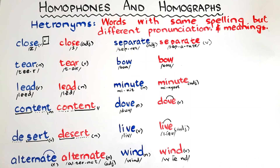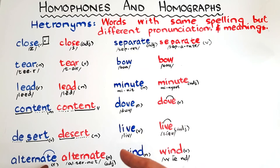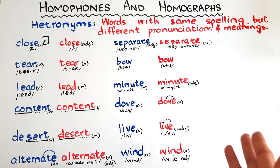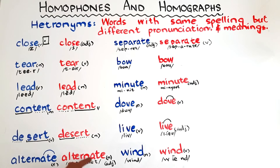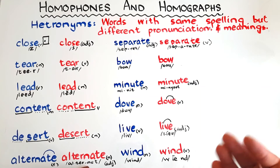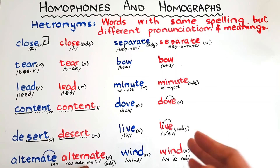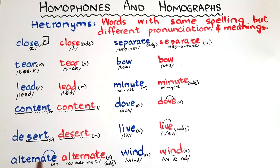The next word is 'alternate' — a verb meaning to switch between two things, as in 'I alternated between a uniform and a casual dress' — and 'alternate', with the vowel saying the schwa sound, used as a noun or adjective, as in 'do you have any alternate dress?' or 'he is my alternate'. The difference in pronunciation is 'alternate' versus 'alternate'.